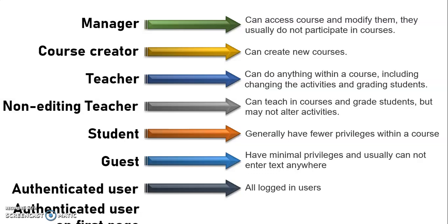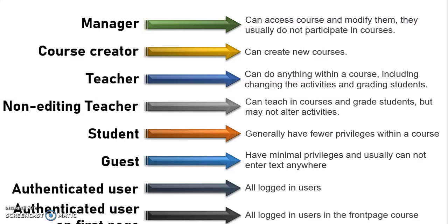An Authenticated User role is given to any user with an account in your Moodle. This role gives users some global permissions to do common things on the platform. All logged-in users are authenticated users inside Moodle. By default, authenticated users have permission to edit their own profile, send messages, post blogs, and do other things outside of courses. Some authenticated users can be put on the front page by the manager, so such users can post blogs and messages on the front page of the course.